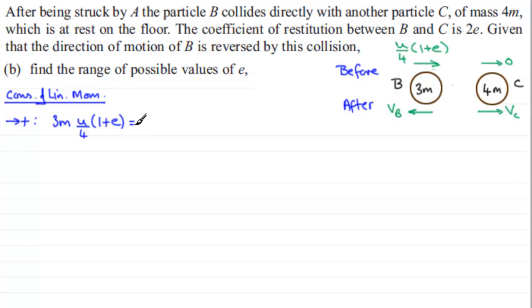So this is going to be equal to the momentum afterwards. The mass for B, which is 3M, multiplied by minus VB because it's moving in the opposite sense. And then we've got the momentum for C, which is its mass, 4M multiplied by its velocity, which is positive VC.